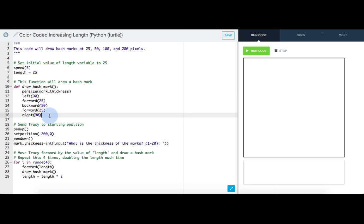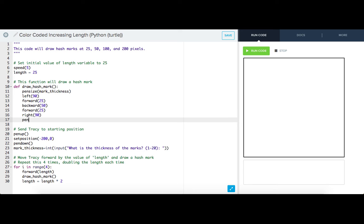And at the end of the hash marks, I want her to change her pen size back to 1. I also need to ask the user for a color before I call my draw hash mark function each time the loop repeats. So let's write color_choice equals input because I don't need this to be a number. What color should this mark be?